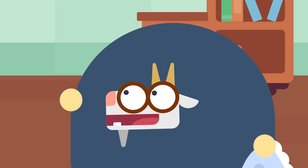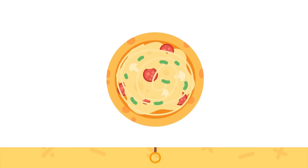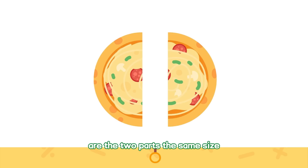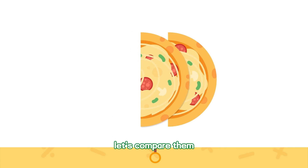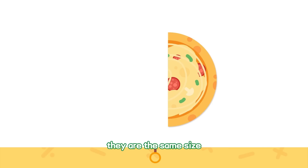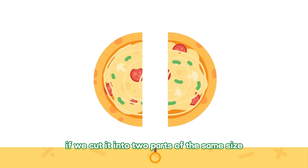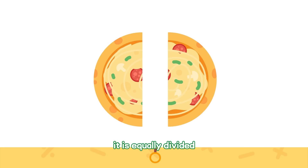What do you mean? Let me explain! This is a round pizza! Split it down the middle like this, and it is divided into two parts! Are the two parts the same size? Let's compare them! One part covers the other perfectly! They are the same size! If we cut it into two parts of the same size, it is equally divided!